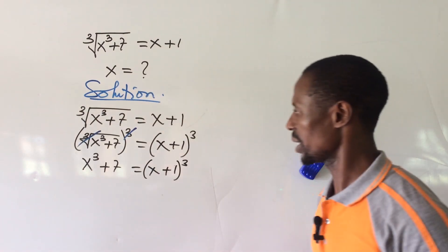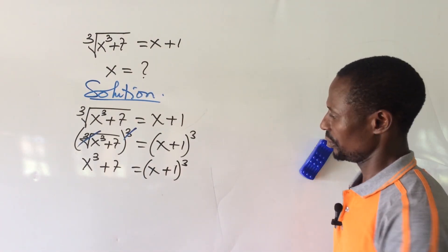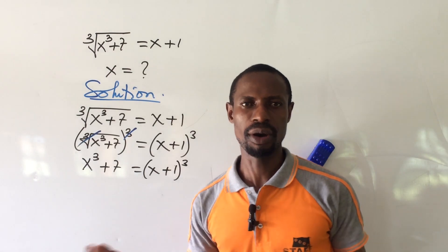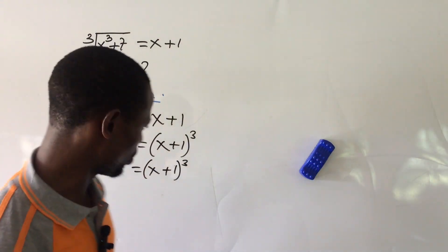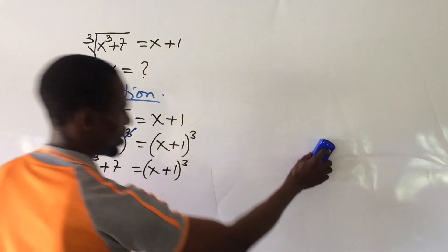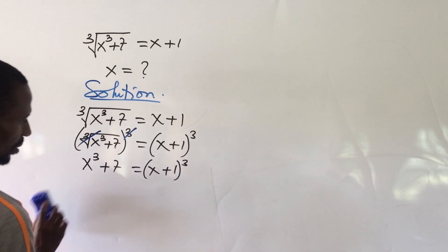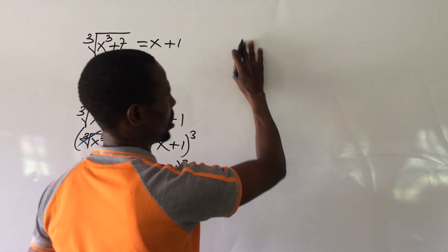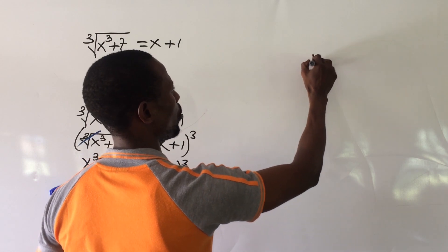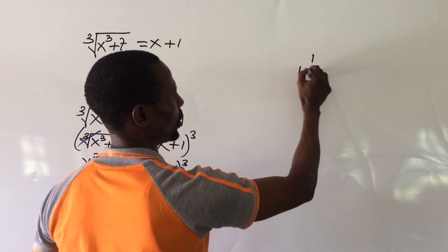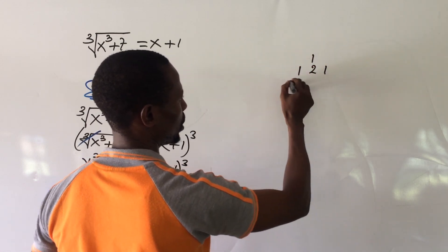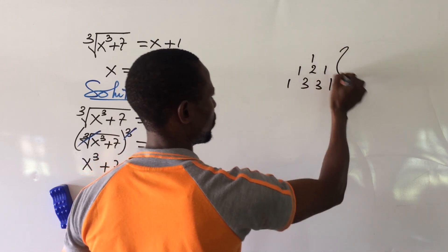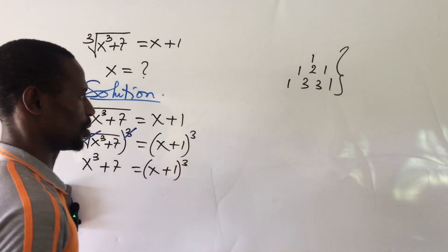Now we can use the binomial expansion to expand this. I want to believe you remember your Pascal's triangle. From the Pascal's triangle we have: 1, then 1 2 1, then 1 3 3 1 — these give us the coefficients for the third degree.